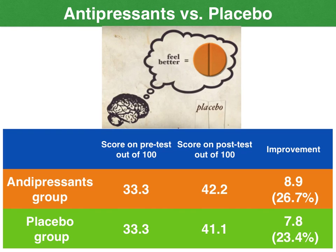We've got 30 in both our control and experimental group. This enables us to generate a set of scores on our pre- and post-test, as well as our numerical and percentage improvement. But how do we know if this improvement or the difference in improvement between the two groups is a significant difference or not? Well, that's where the p-value comes into play. In VCE, we don't need to learn how to calculate the p-value, but it's based on the level of difference in improvement between our two means, as well as the sample size and standard deviation.